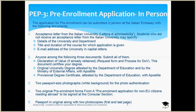Even if your university application is still being processed, you can still apply for pre-enrollment, but it is always better to already have the admission letter — that is why you must start early. The application for pre-enrollment must be submitted in person at the Italian Embassy in your home country. The required documents include: the acceptance letter from the Italian university, the Declaration of Value, original documents, two passport-size photographs with white background, two original pre-enrollment application forms (Form A), your original passport, health insurance if available, and proof of funds to support your education in Italy.